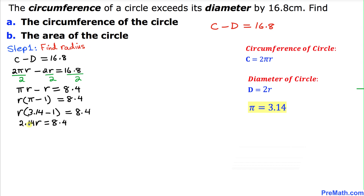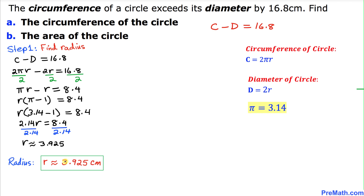Now we isolate r by dividing both sides by 2.14. Therefore, r is approximately equal to 3.925. So our radius turns out to be approximately 3.925 centimeters.